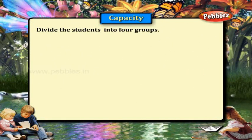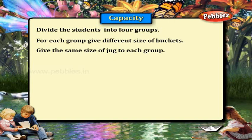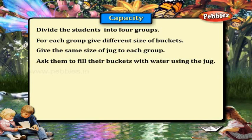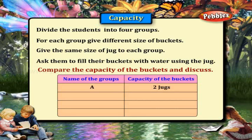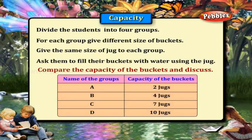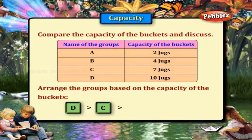Divide the students into four groups. For each group, give a different size of bucket. Give the same size of jug to each group. Ask them to fill their buckets with water using the jug. Compare the capacity of the buckets and discuss. Arrange the groups based on the capacity of the buckets: D is bigger than C, C is bigger than B, B is bigger than A.